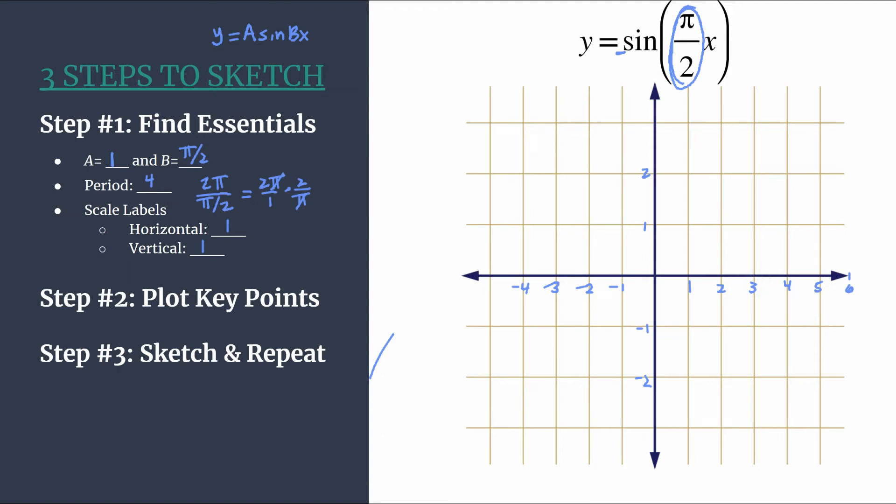So starting from the origin, we say zero, maximum—its y-coordinate comes from the a value—zero, minimum—it's just got a y-coordinate that's the opposite value from a—and then you would repeat. So we'll put our first repeat, our first point of the next cycle at four zero.